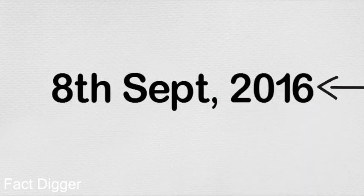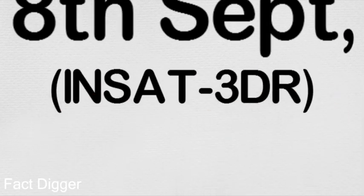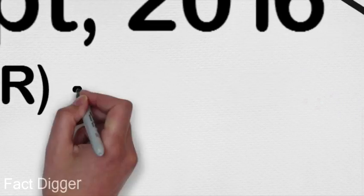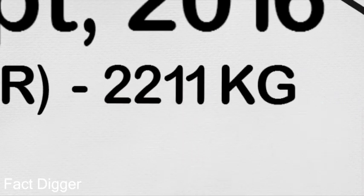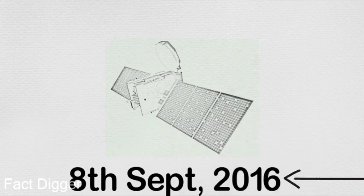On 8th September 2016, INSAT-3DR, an advanced weather satellite as well as the second heaviest satellite weighing 2,211 kg, was successfully placed in geostationary transfer orbit by ISRO.